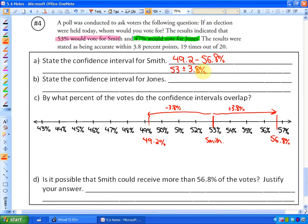For Jones, his mean is 47%, and their margin of error is 3.8%. So if I add 3.8%, I'll get 50.8%. So he's going to get between 50.8% and 43.2%. So that's between 43.2% and 50.8%, or in other words, the mean, 47 plus or minus the margin of error, 3.8%. So that's an answer to that.